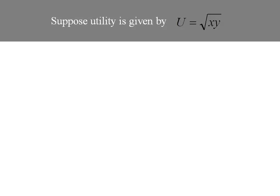Let's suppose utility is given by the square root of x times y. To find the marginal utility of x, we'll take the derivative of utility with respect to x. And to find the marginal utility for good y, we'll take the derivative of utility with respect to y.